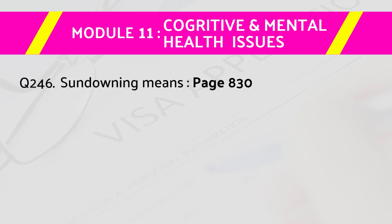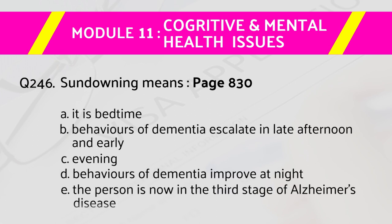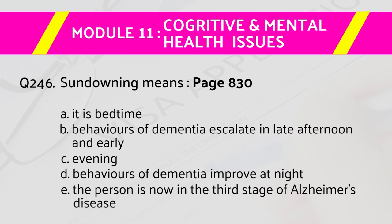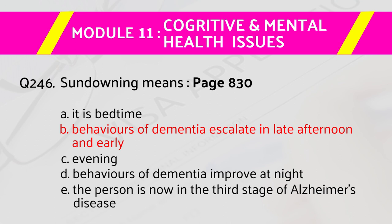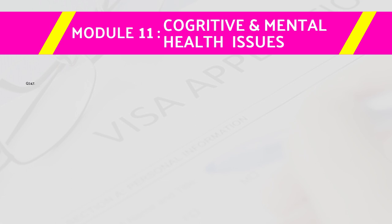Question number 246: Sundowning means — page 830. Answers are: a) it is bedtime, b) behaviors of dementia escalate in late afternoon and early evening, c) behaviors of dementia improve at night, d) the person is now in the third stage of Alzheimer's disease. The right answer is b) behaviors of dementia escalate in late afternoon and early evening.